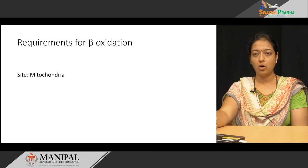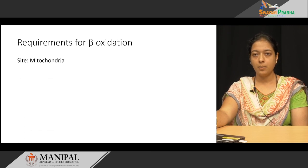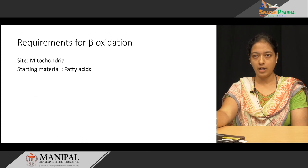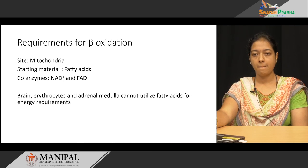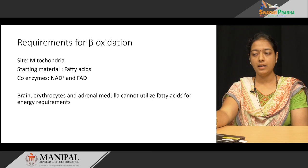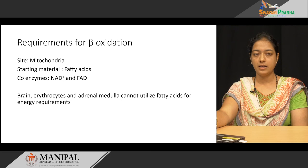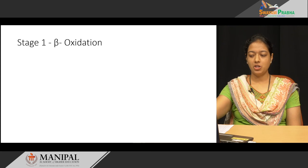The major reactions of beta oxidation take place in the mitochondria. The starting material for beta oxidation is fatty acids. The coenzymes required for the reactions are NAD+ and FAD. Beta oxidation takes place in all cells except the brain, erythrocytes, and adrenal medulla — these are areas which cannot utilize fatty acids for energy.